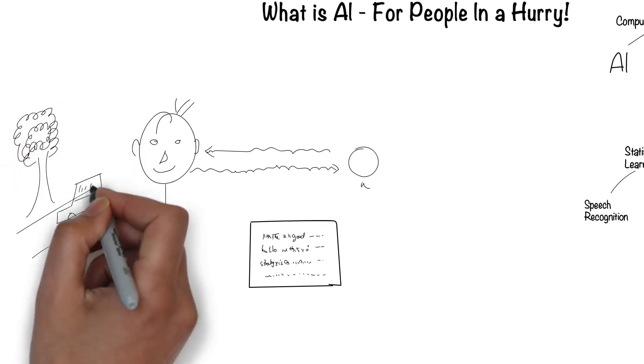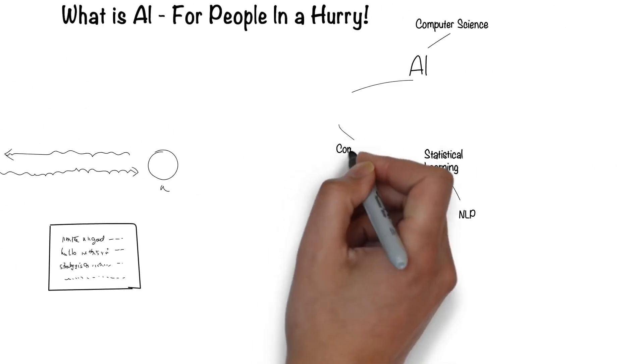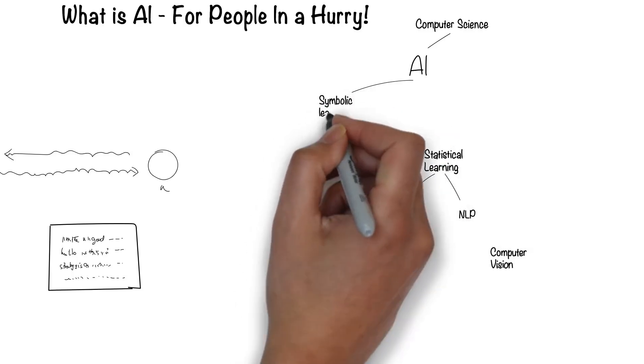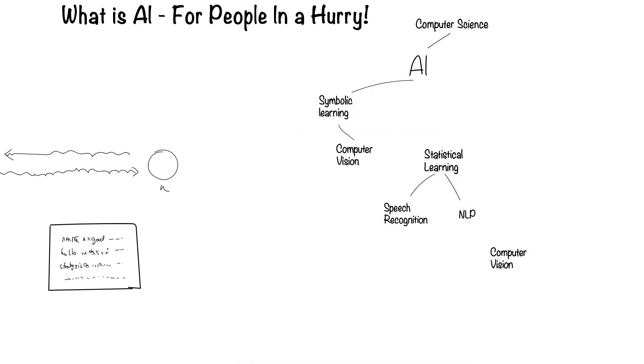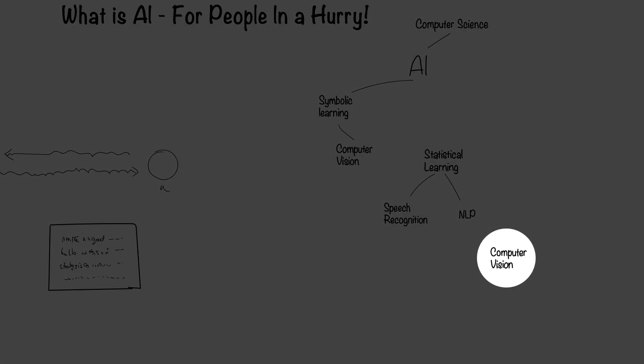Humans can see with their eyes and process what they see. This is the field of computer vision. Computer vision falls under the symbolic way for computers to process information. Recently, there's been another way, which I'll come to later.